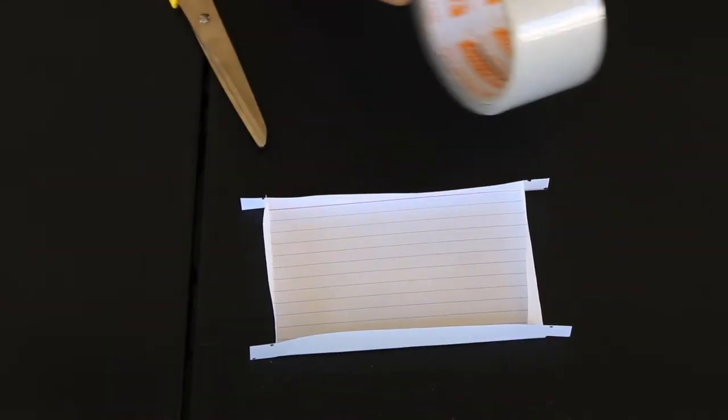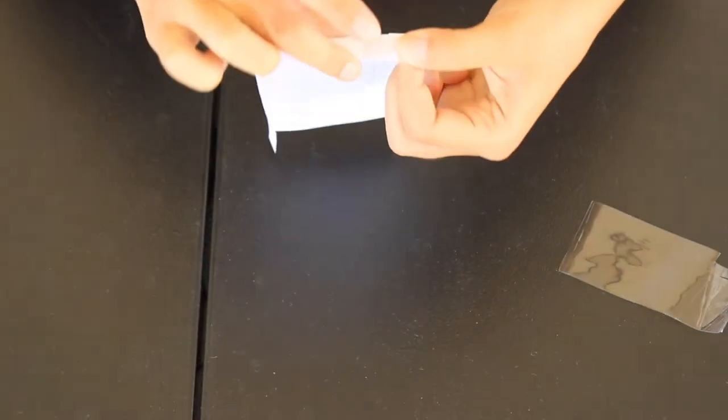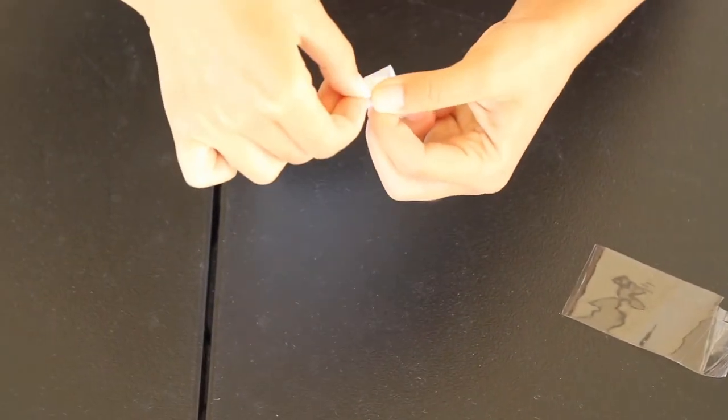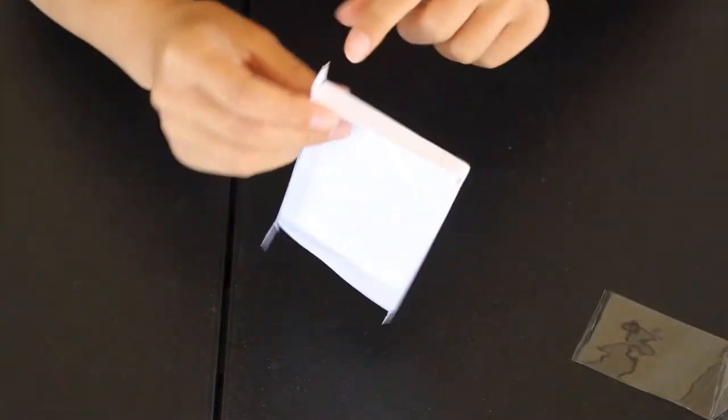Then we're going to take our tape and start taping it around. We're going to take a little flap and tape it down so it makes like a nice little box. I'm going to do that for all the edges.